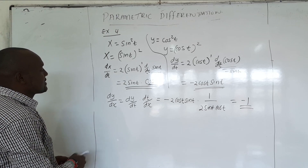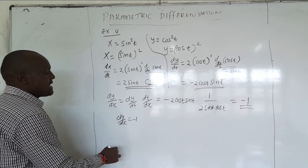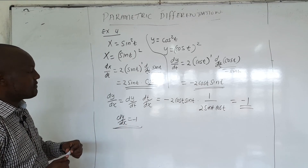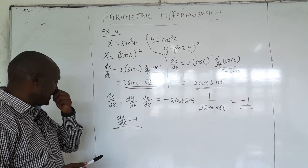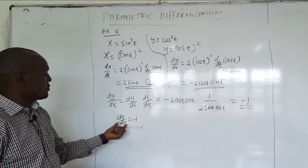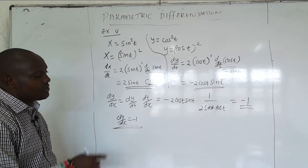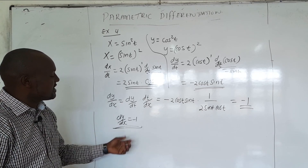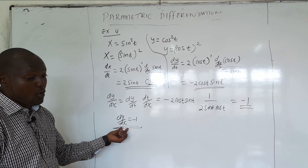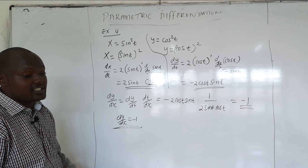So dy/dx equals negative 1. For the second derivative, we differentiate negative 1 with respect to T, which gives 0. Then 0 times dt/dx gives 0. Because negative 1 is a constant, the second derivative is 0.